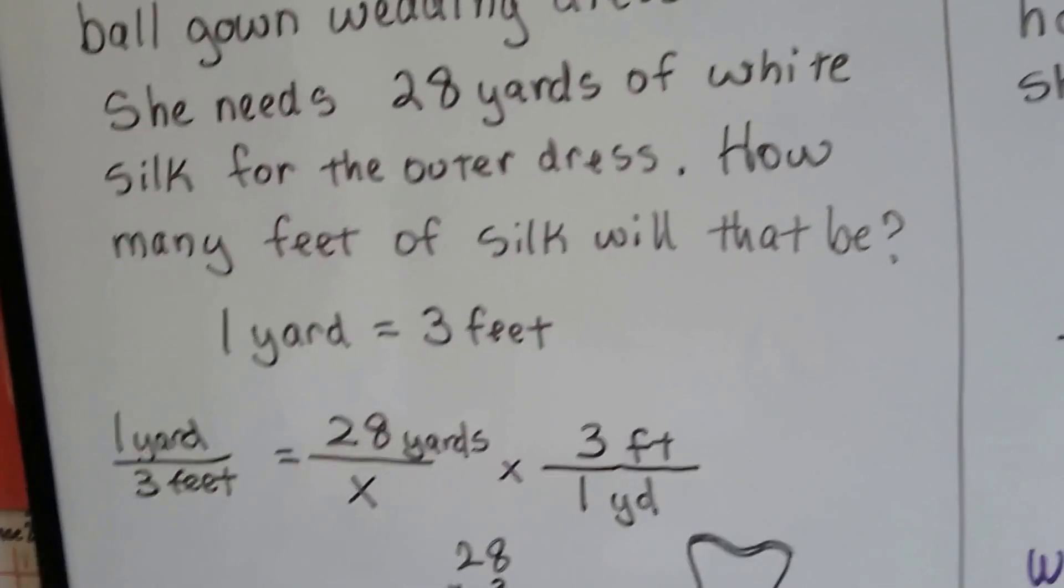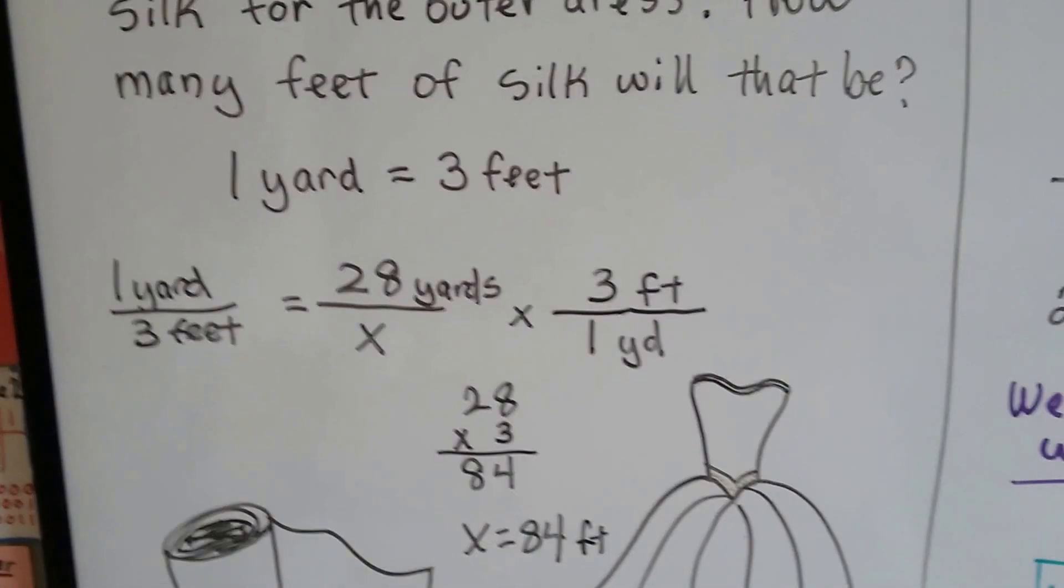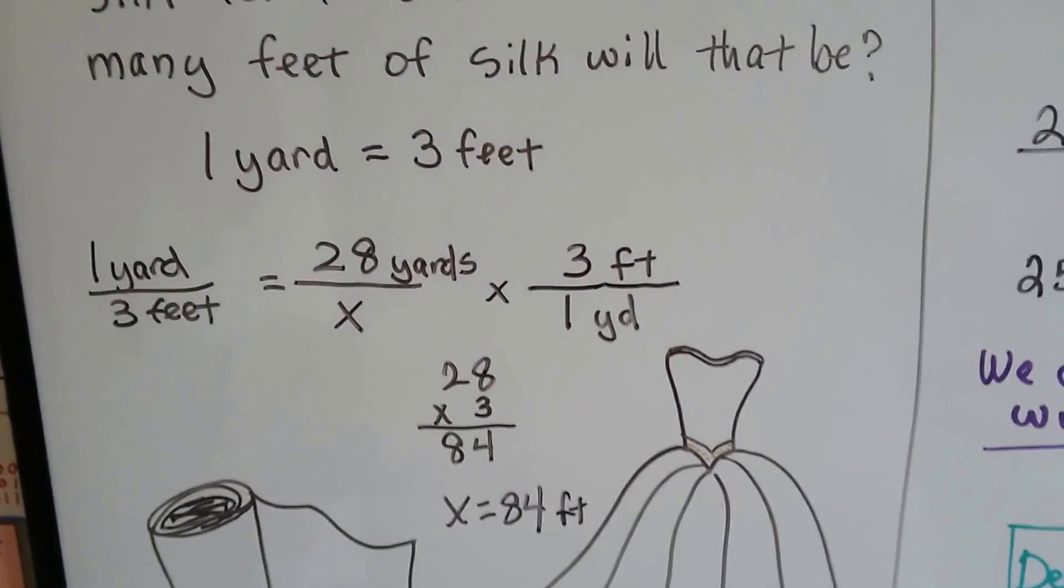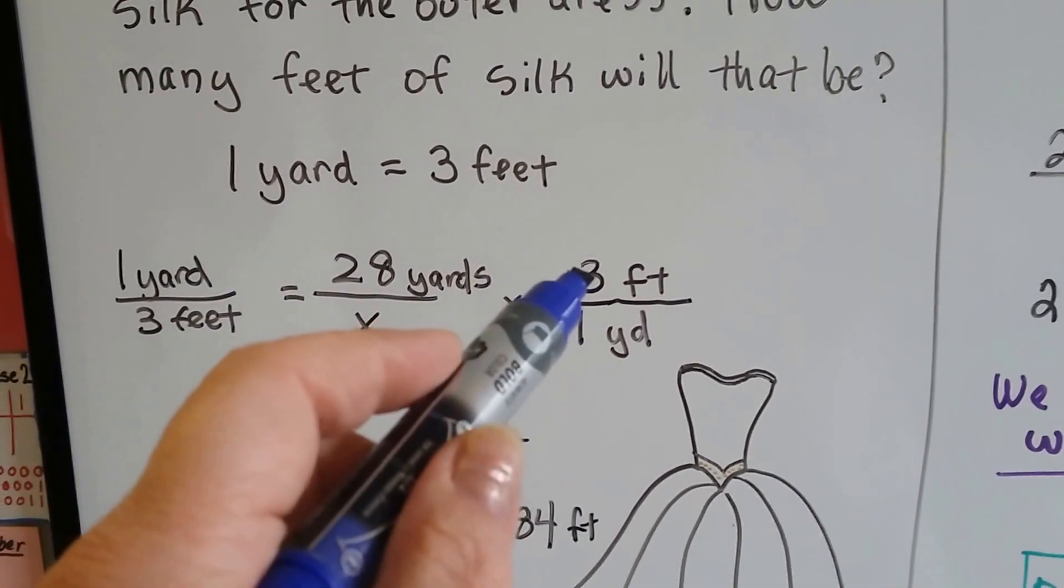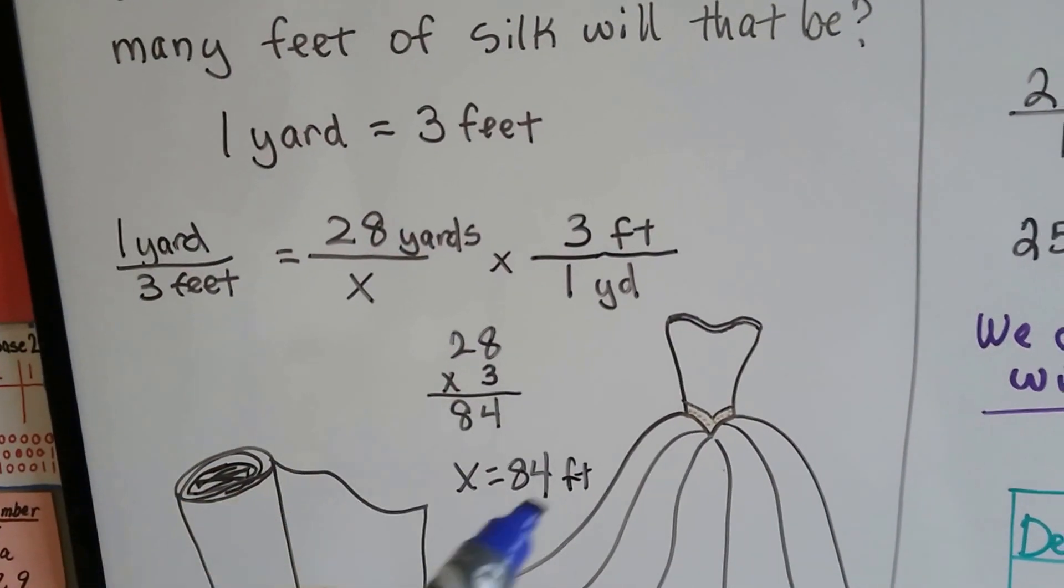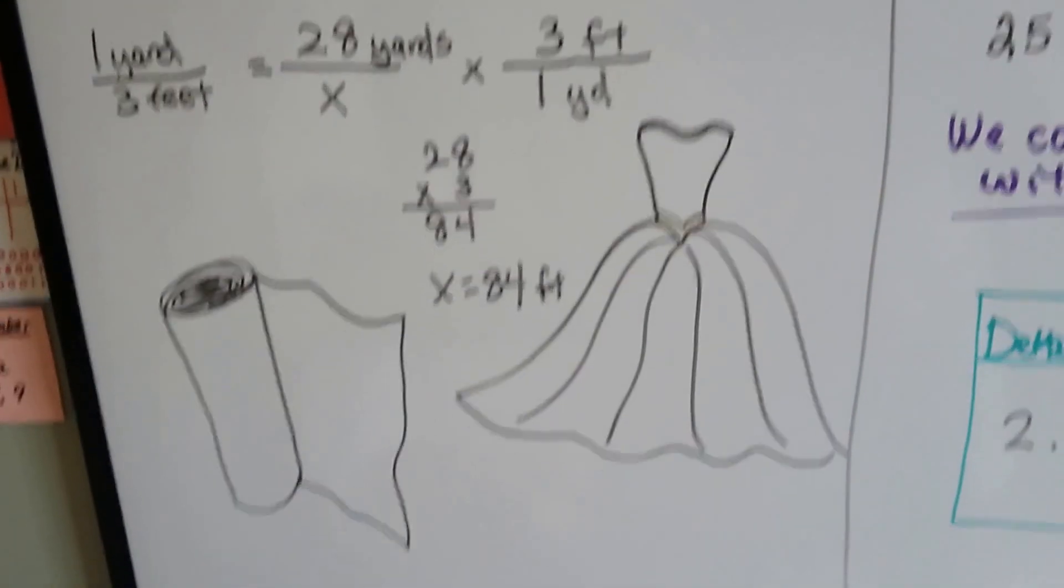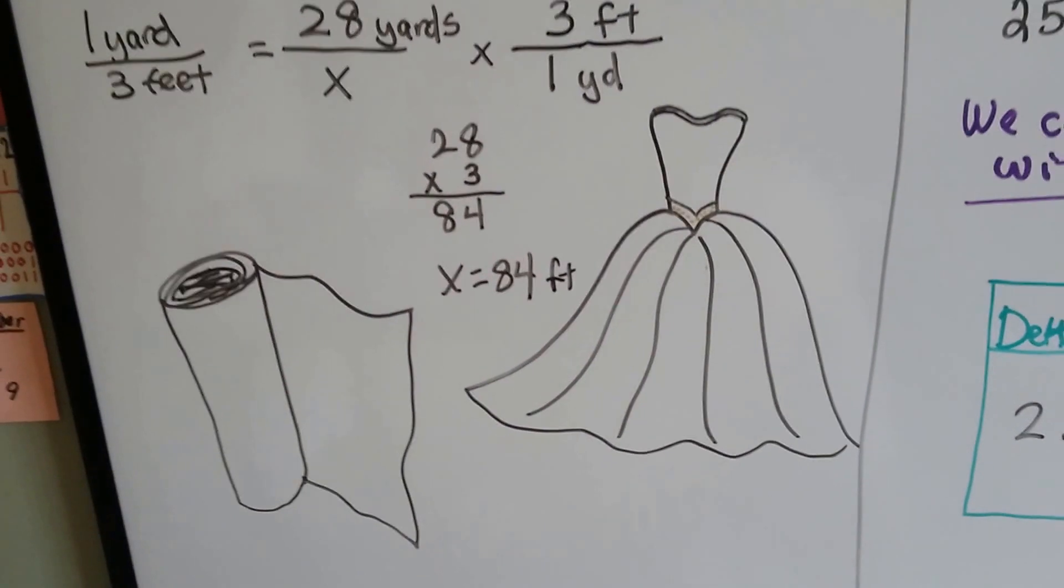Well, one yard is equal to 3 feet, so all she needs to do is multiply it by 3, right? 28 yards, 3 feet in each yard. 28 times 3 is 84. That would be 84 feet of silk. Wow, that's a lot of fabric.